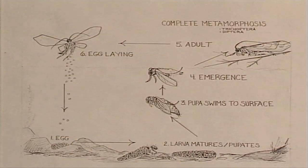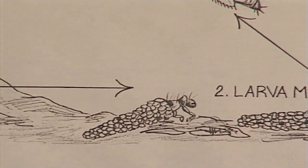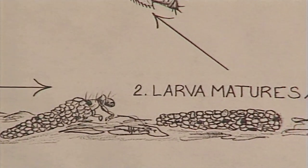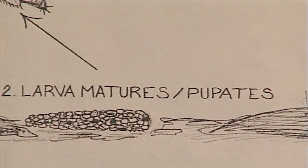Aquatic insects go through two types of different life cycles. The first is complete life cycle or complete metamorphosis. These insects are the caddisflies and the midges. They start off as an egg and hatch into a larva — this is where they spend most of their life. The larva then matures and pupates, and most of them build a case or cocoon to pupate in.